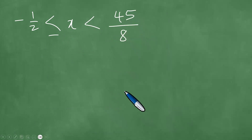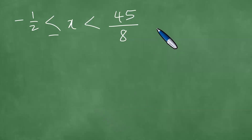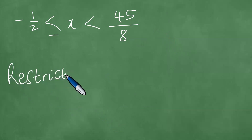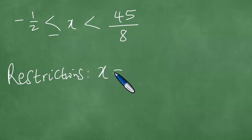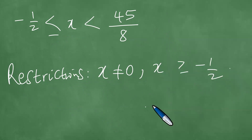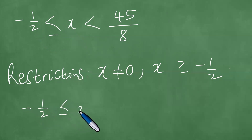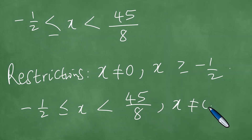We have solved the particular problem and this is the answer we got. But recall the restrictions: x is not 0, and x is greater or equal to minus 1 half. This answer must also satisfy the restrictions. Since 0 lies between minus 1 half and 45 over 8, the solution is minus 1 half less than or equal to x, less than 45 over 8, together with x not equal to 0.